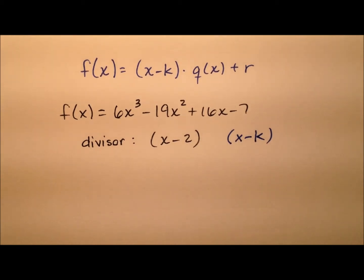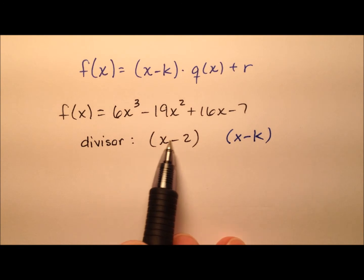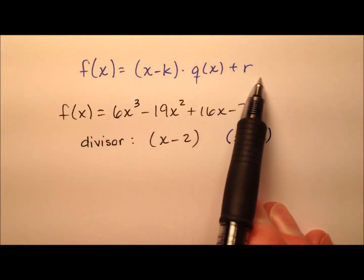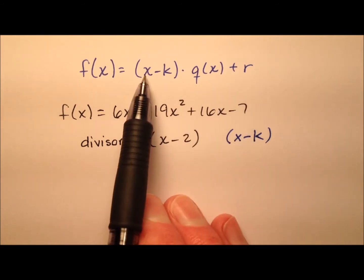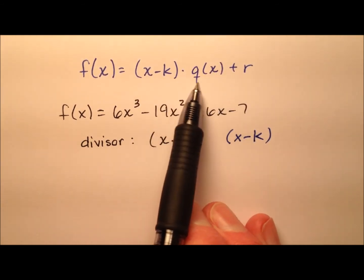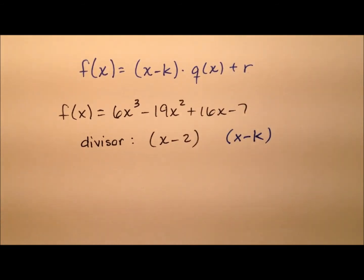In this video, I want to talk about how we can take a polynomial function and some divisor in the form x minus k and we're going to rewrite it in this form right here. It's the divisor x minus k times the quotient q(x) and then plus r which is your remainder.